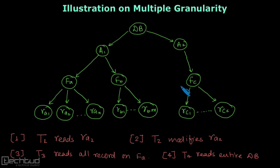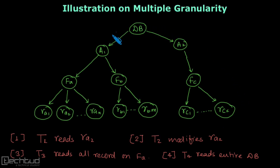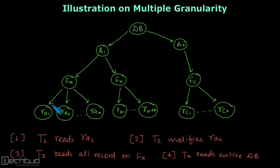Hello everyone, welcome to Tektor.com. In this video, we will solve this example to illustrate the protocol of multiple granularity. This is the granularity level given — basically this is the tree formed with the granularity. Here you can see: this is the database, these are areas, these are files, and these are records. This is the hierarchy of physical organization of data.